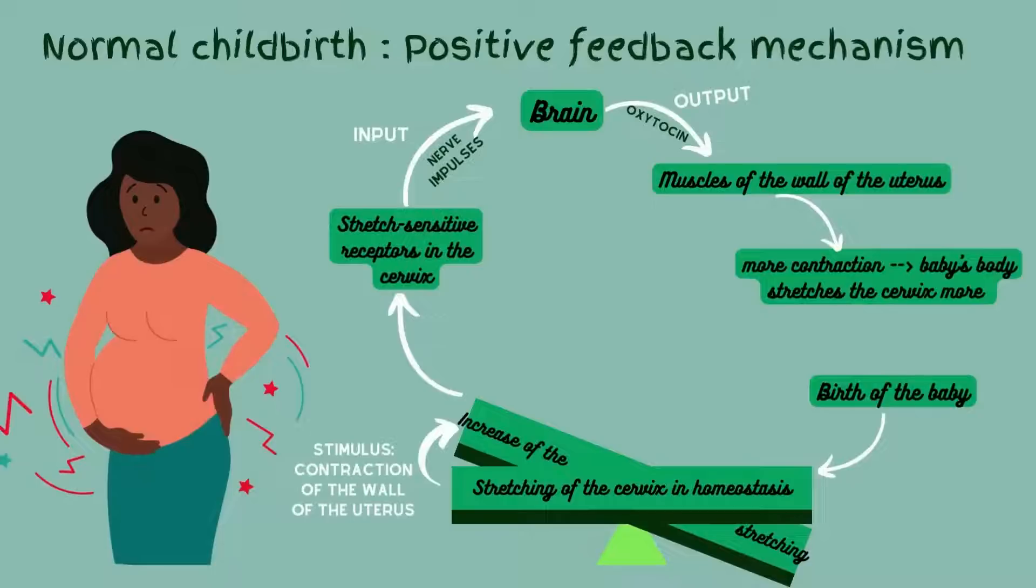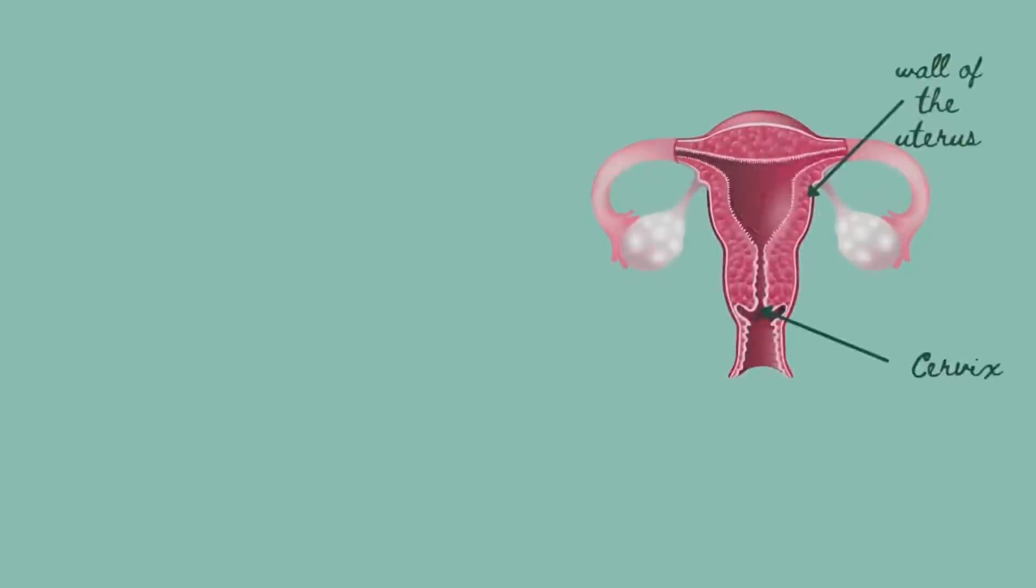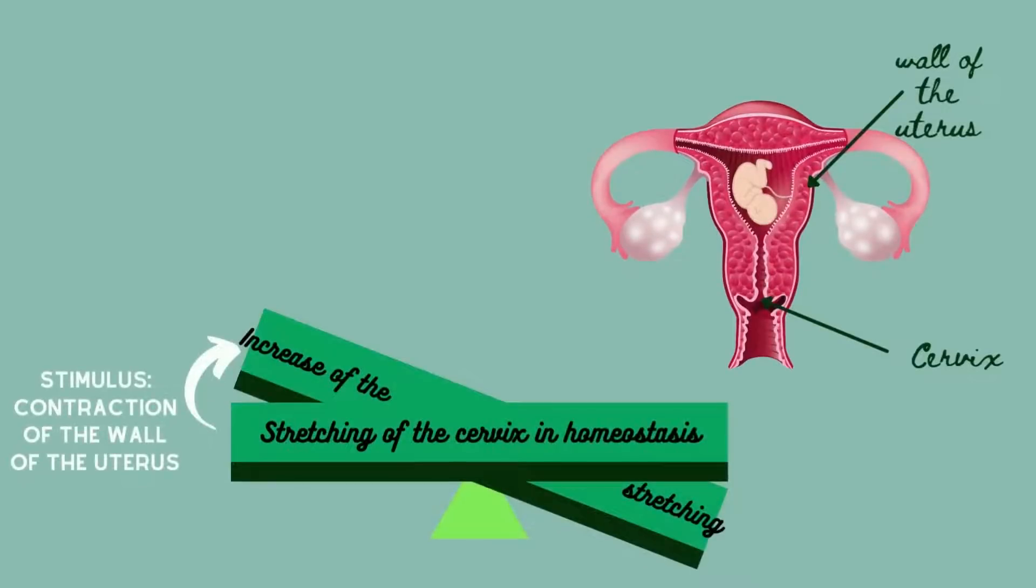As we mentioned before, normal childbirth uses the positive feedback mechanism. First, the contraction of the wall of the uterus forces the head or the body of the baby into the cervix. This is the internal stimulus that increases the stretching of the cervix, hence causing a homeostatic imbalance.